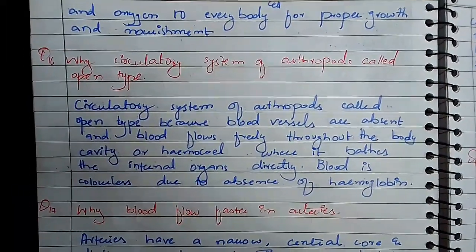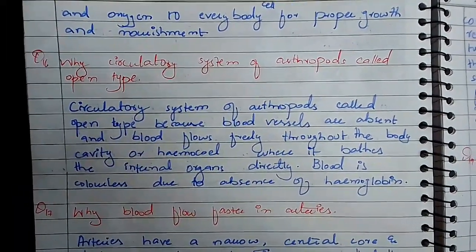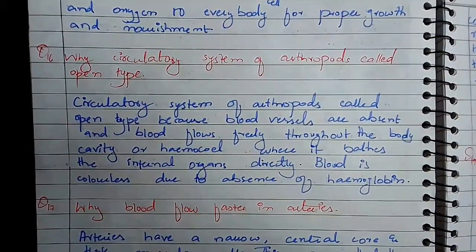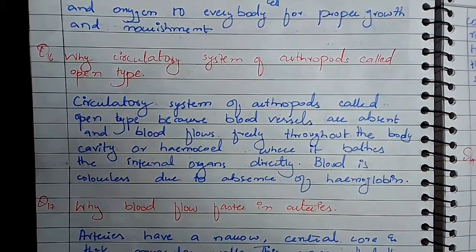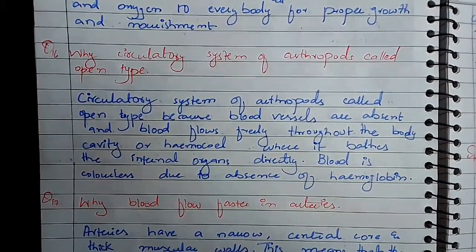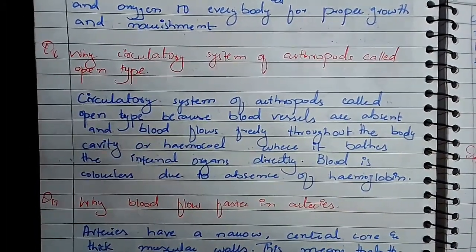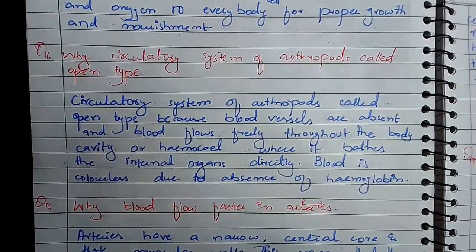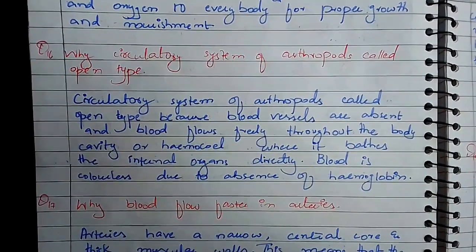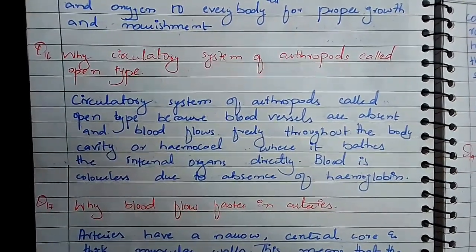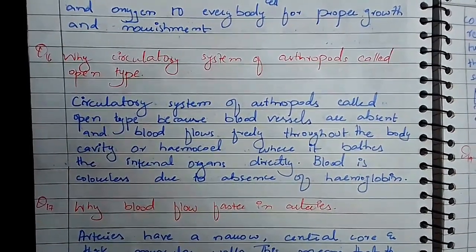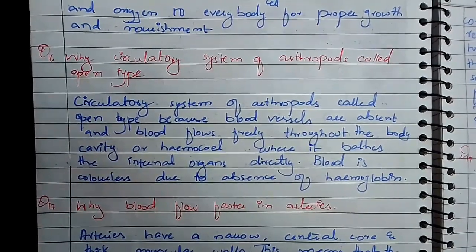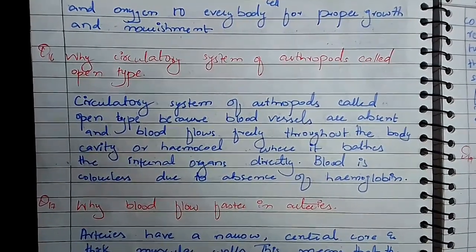Question number 16: why is the circulatory system of arthropods called open type? Arthropods have an open type circulatory system, meaning they have no blood vessels. When blood vessels are absent, their blood moves freely through the body cavity.